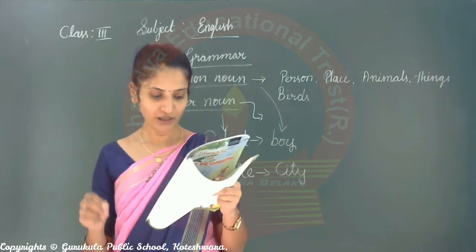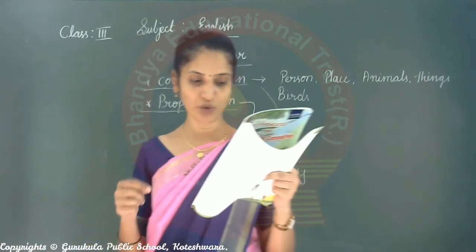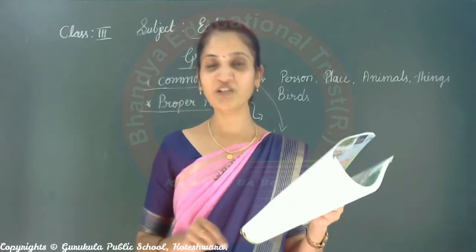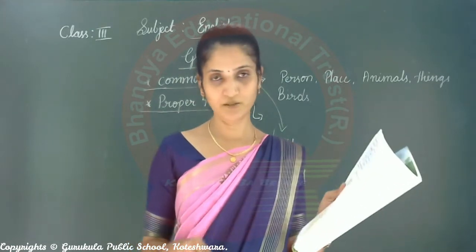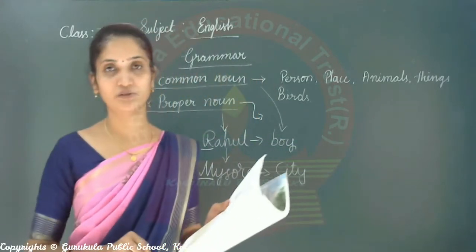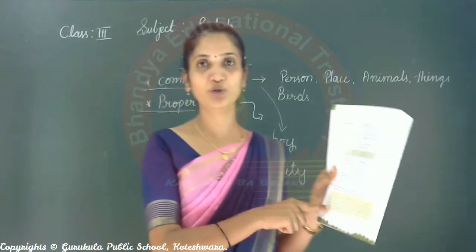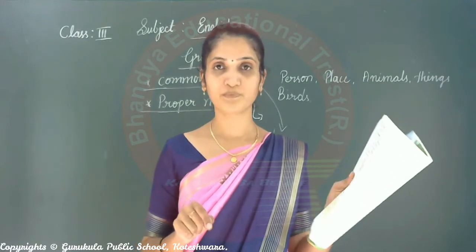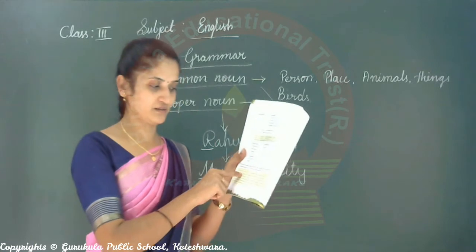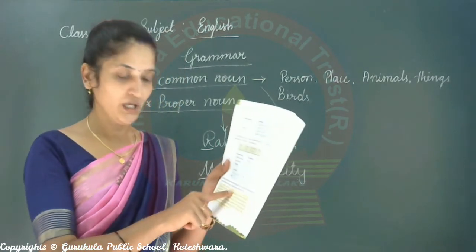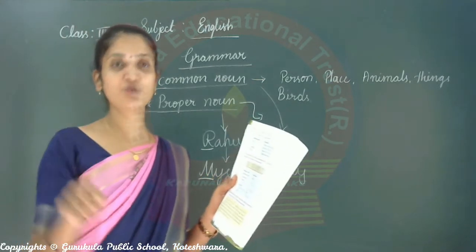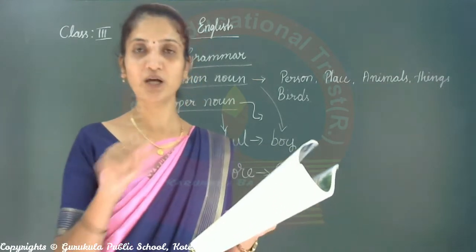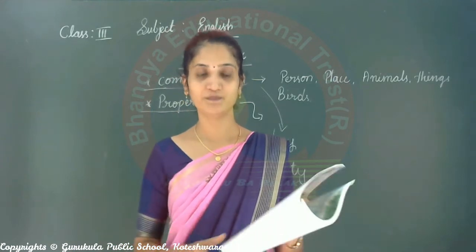If you have any doubt, you can ask in the evening class. Read the following review of a children's book. Underline all common nouns and circle all the proper nouns. The first one has been done for you. This is your work — underline common nouns and circle proper nouns. One is already done for you, and rest all you should do. First, you read carefully, then find out — if it is a common noun, underline it; if it is a proper noun, circle it.